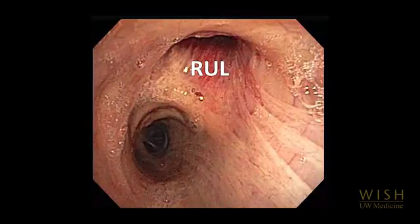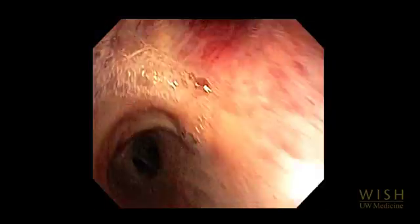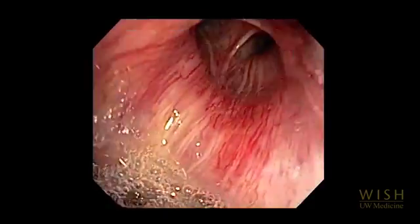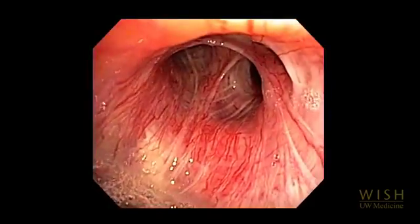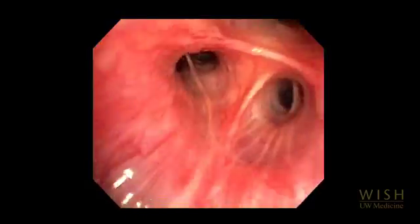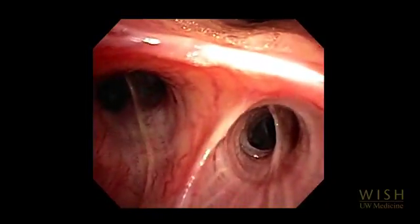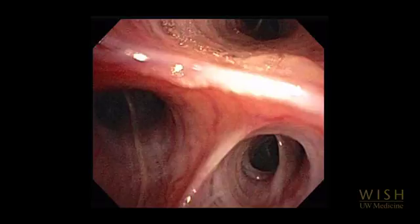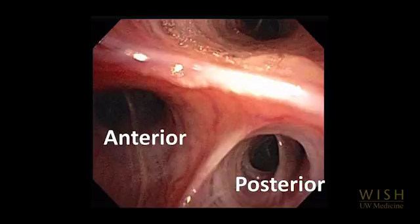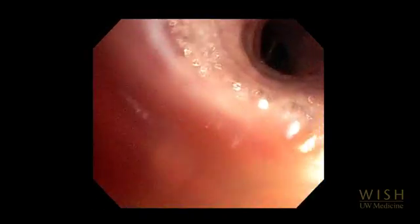The right upper lobe bronchus takes off anterolaterally. The right upper lobe trifurcates into three segments; it can be hard to see all of these at the same time. Here we clearly see the anterior and posterior segments. The apical segment is just visible, and now we have a better view of the apical segment.